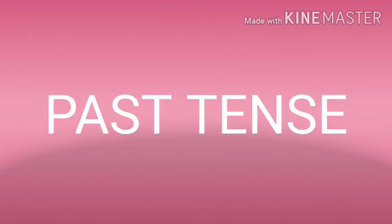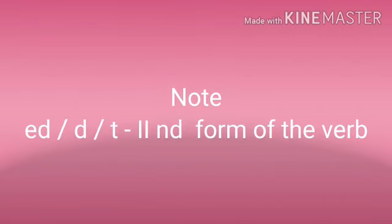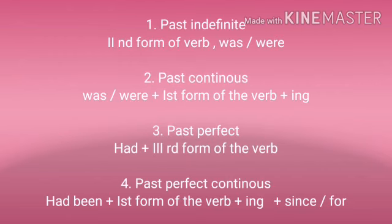Past tense. Note: E-D, D, T — second form of the verb. Past indefinite: second form of the verb. Was/were. Past continuous: was/were plus first form of the verb plus I-N-G. Past perfect: had plus third form of the verb. Past perfect continuous: had been plus first form of the verb plus I-N-G plus since/for.